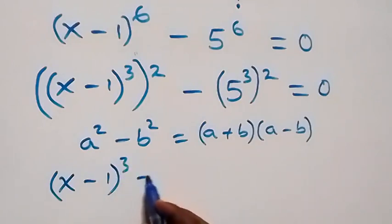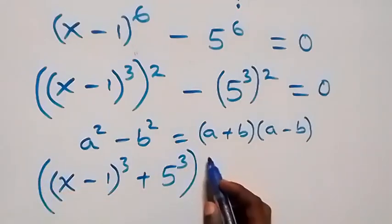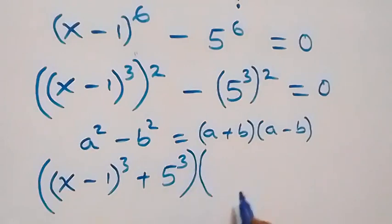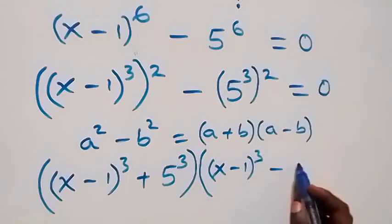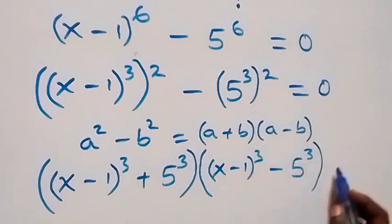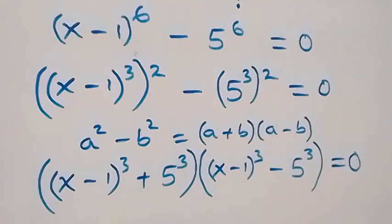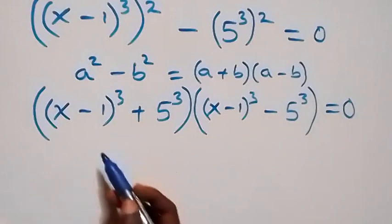This gives us: x minus 1 raised to power 3, plus 5 raised to power 3, into bracket x minus 1 raised to power 3, minus 5 raised to power 3, close bracket, equals to 0.